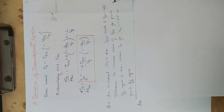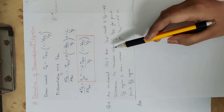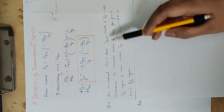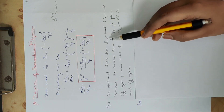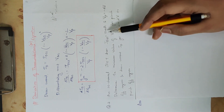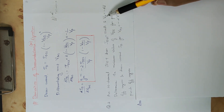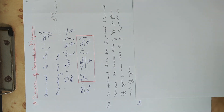Next, in the J-FET parameter: an N-Channel J-FET has IDSS equal to 10 mA (drain saturation current) and VP equal to minus 4 V.